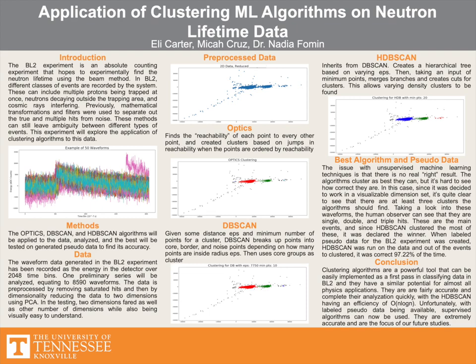DBSCAN found the main three groups as well, but had trouble including as many points in the third group as it should have. This is due to the varying densities of the groups.